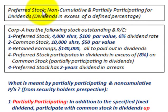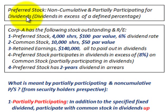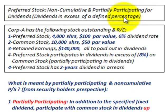What we're going to be going over here is preferred stock. It's going to be non-cumulative and partially participating for dividends, and this is where the dividends in excess of a defined percentage are going to be paid out for the partially participating amount of this preferred stock.